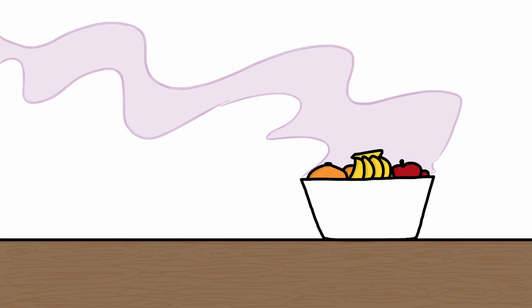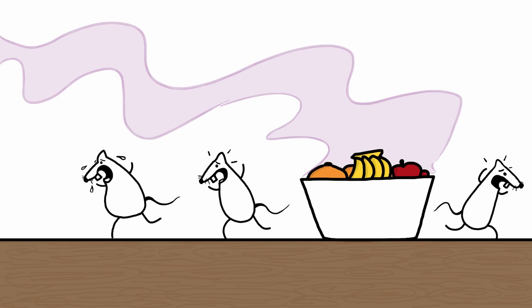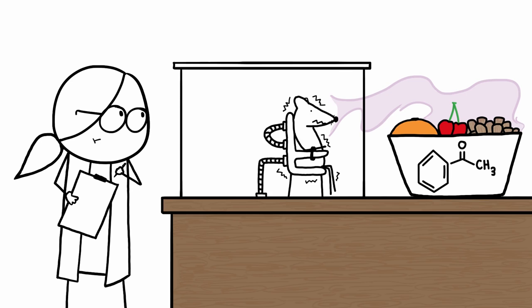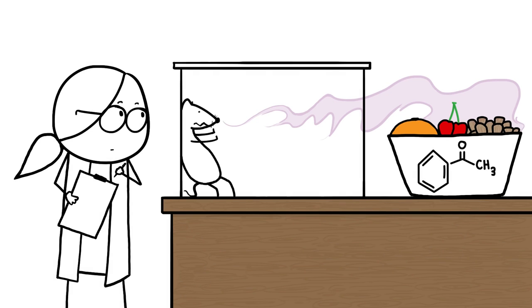The sweet smell of fruit doesn't normally send rats running, but when researchers paired the orange cherry almondy scent of the chemical acetophenone with a painful electric shock, lab rats quickly learned to fear it.